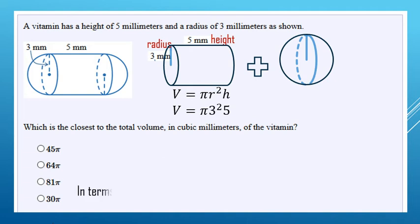Now, notice all the answers are in terms of pi, which means when we do our calculations, we don't multiply by pi. So 3 squared is 9 times 5, makes 45 pi, or 45 times pi.